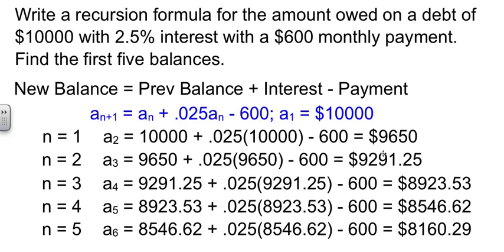And so after we've made five sets of payments, we're down to owing $8,160.29. Now that's five months, we've knocked almost $2,000 off the debt, which isn't too bad.